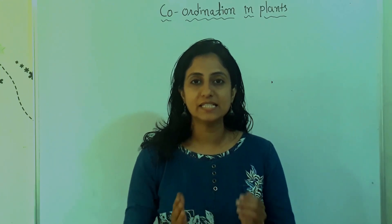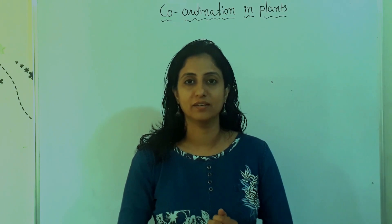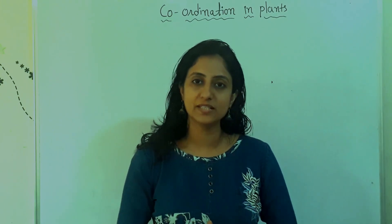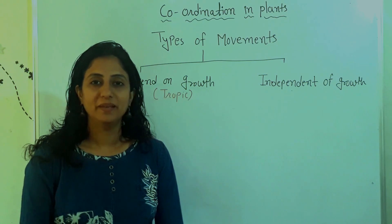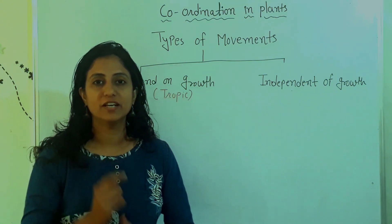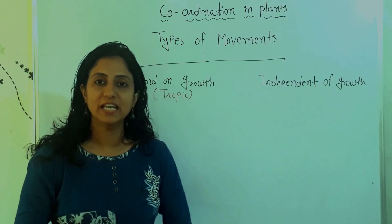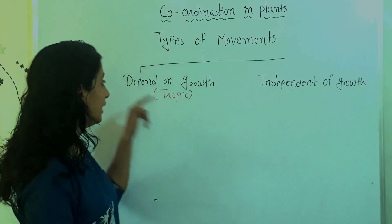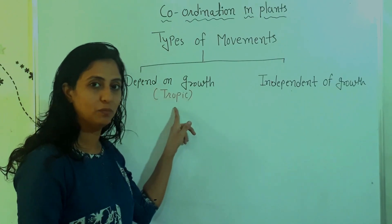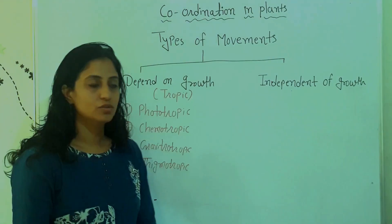So students, this is how movement takes place in Mimosa polica. Now let's see the different types of movements in plants. Plants exhibit two types of movement: the first one is dependent on growth, and the second one is independent of growth. Movement dependent on growth is also known as tropic movement.